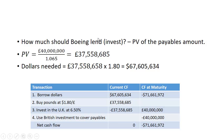How much should Boeing lend — that is, how much should they invest? They want to invest the present value of the 40 million pounds. At the UK interest rate of 6.5%, they need to invest 37,558,685 pounds. To buy that many pounds at $1.80, they'll need $67,605,634.